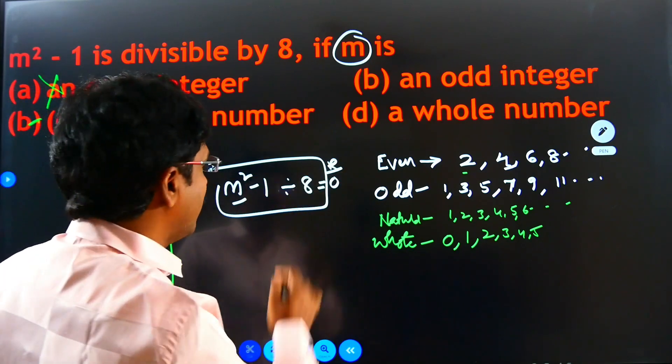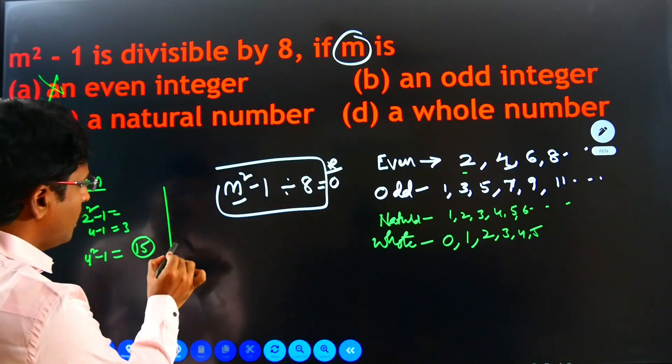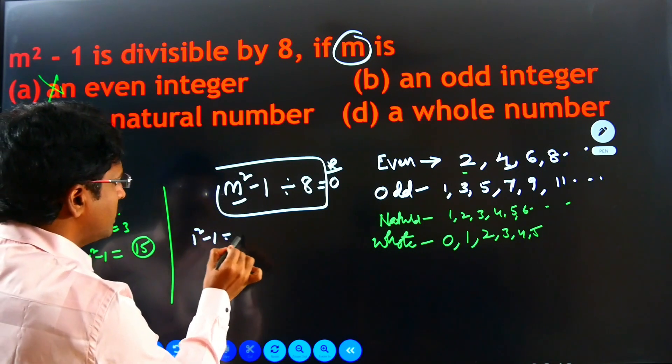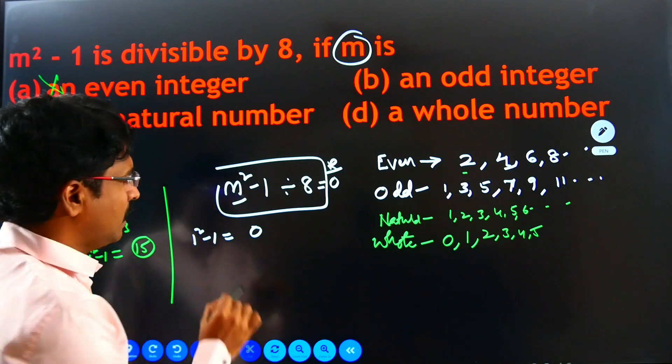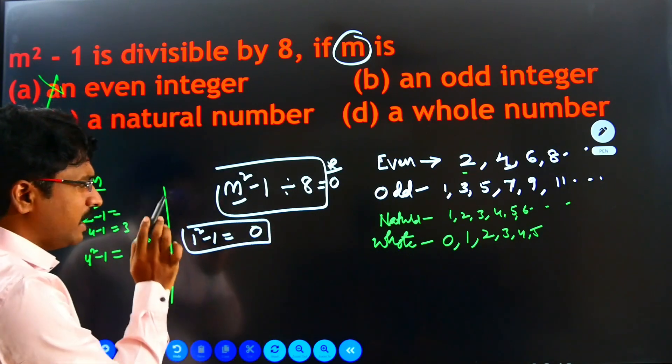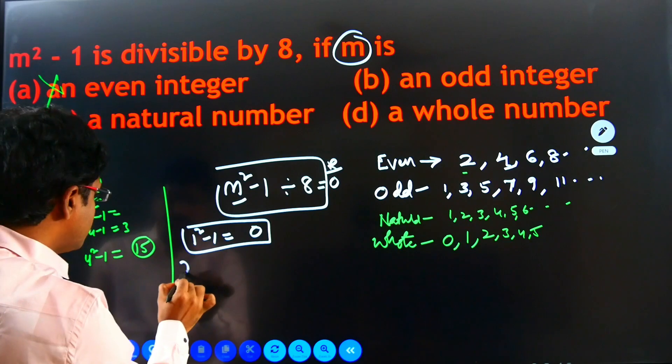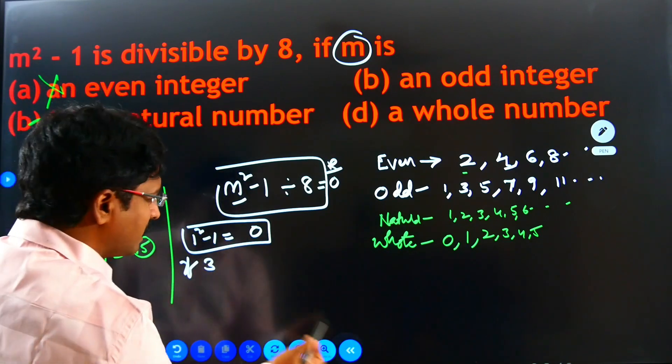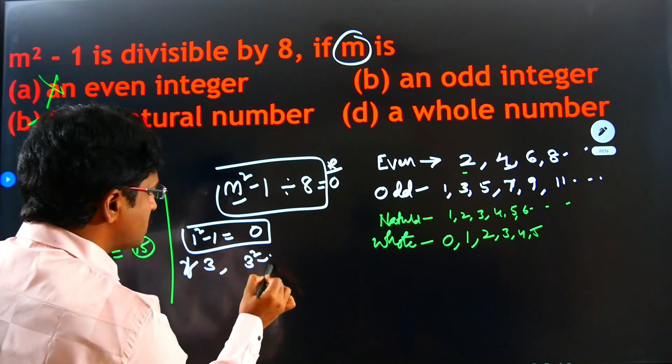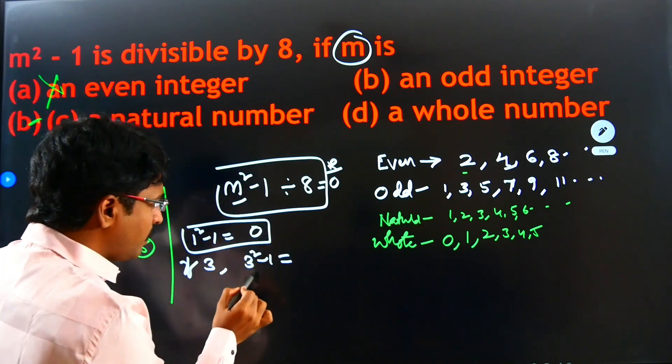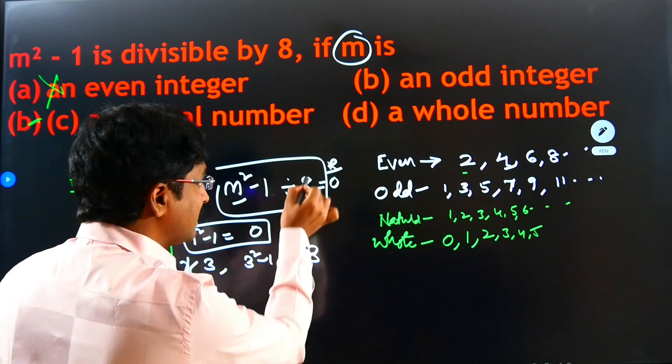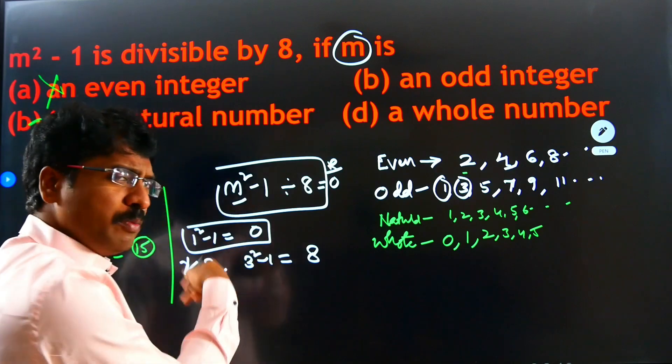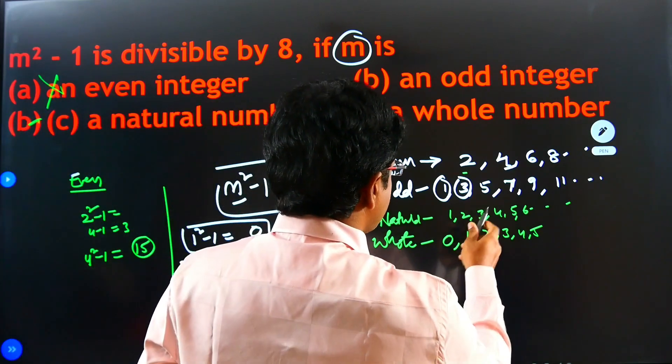We'll go the next one, odd number. If in case M is 1, 1 square minus 1, that equals 0. We cannot take the 0. So, we'll go the next one. If M is 3, then 3 square minus 1. 3 square means 9. 9 minus 1, 8. Yeah, 8 comes in 8 table. 3 is coming. 1 also coming. Because 0 means you can take that. It's exactly divisible.